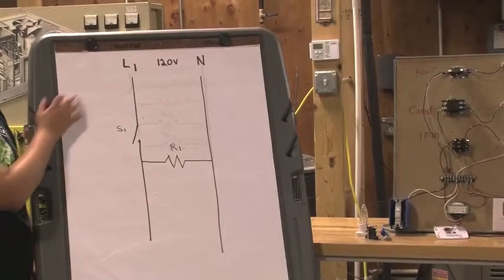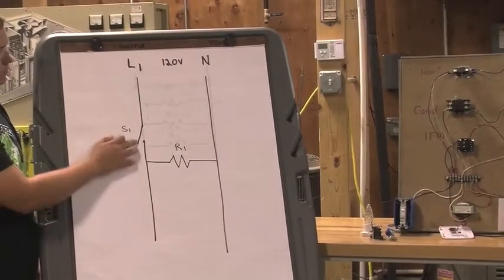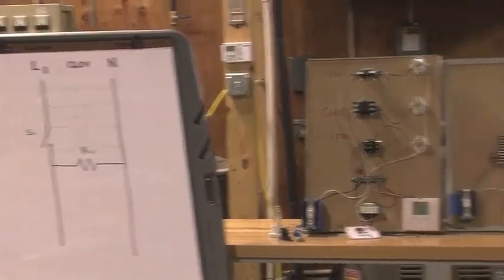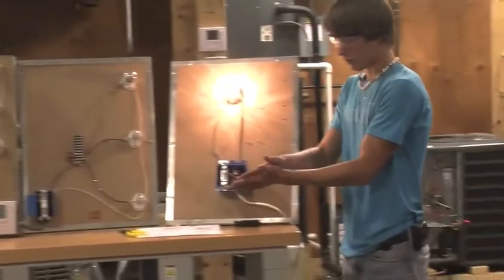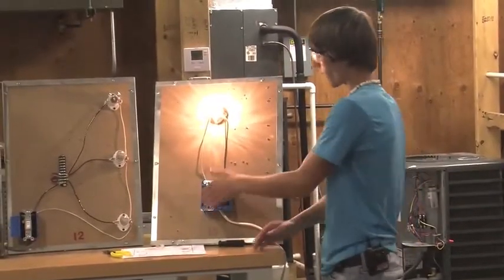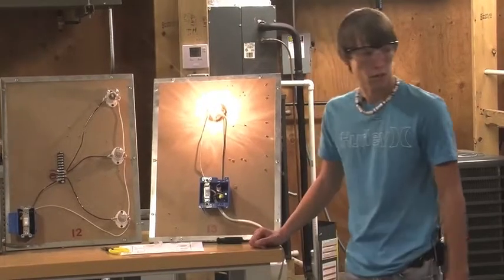Your L1 will come and it's actually broken right here at your switch and runs out to your load. But once you switch it on, that relay or that contact closes and allows the power to come out and lights up that light bulb.